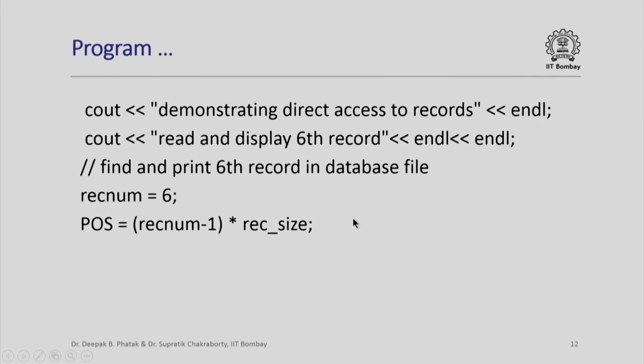Next, I try to demonstrate how direct access to records can be done. What I am trying to do is read and display the sixth record in the file. How do I go directly to the sixth record? I set rec_num as 6 and then I calculate the position of this record which is equal to rec_num minus 1 times rec_size. This is the place where the sixth record will begin.